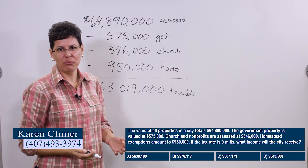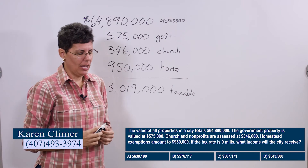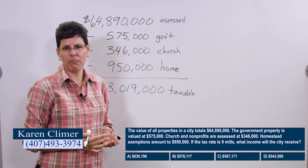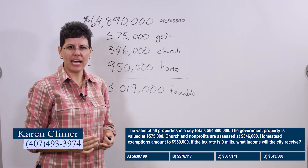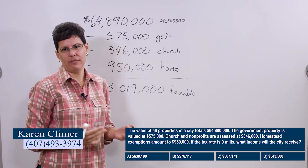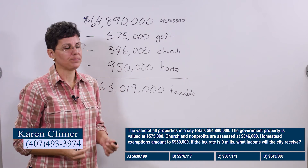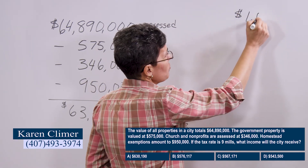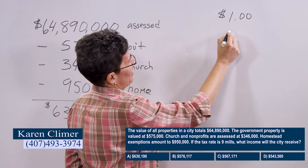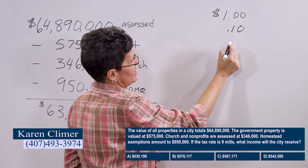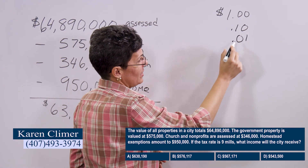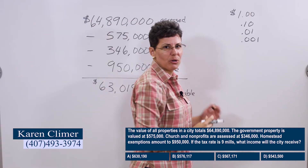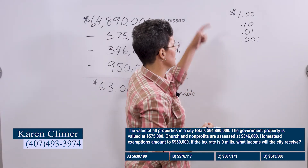The tax rate is nine mills. We express property tax rates in mills — just like sales tax is a percentage, for property tax we use a mill. So what is a mill? This is one dollar. This is ten cents. This is one cent. This is one mill. A mill is one one-thousandth of a dollar.